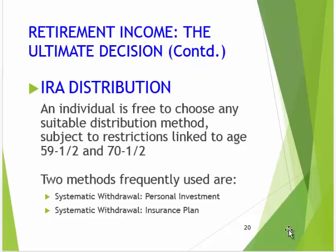We're talking about distributions: 59.5 is the soonest and 70.5 is the latest. You can withdraw from IRAs systematically or through an insurance plan. The personal investment process is typically done through some kind of brokerage firm, while insurance plans are typically done by insurance companies.